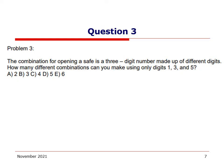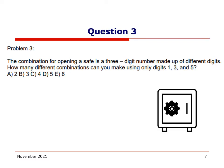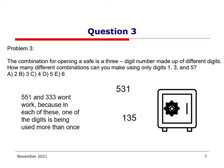On to question three. The combination for opening a safe is a three-digit number made up of different digits. How many different combinations can you make using only the digits one, three, and five? We need to figure out how many combinations we can make that are three digits and can involve one, three, and five, but we can't use any of those more than once. For example, five-three-one or one-three-five could work, but five-five-one or three-three-three couldn't, because one of the digits is being used more than once.